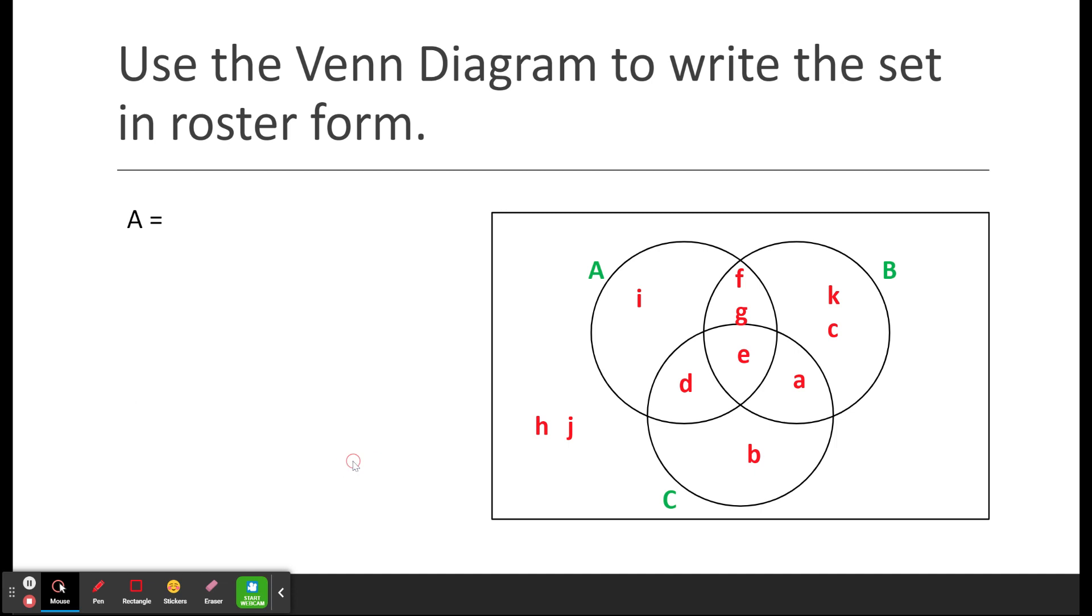We're going to go through each of these individually. First, we look at A. So anything that's in A, we're going to be looking at just this chunk, just the stuff that we find in A. That's going to include regions 1, 2, 4, and 5. And for this example, it's going to be these letters. We've got D, E, G, F, and I.